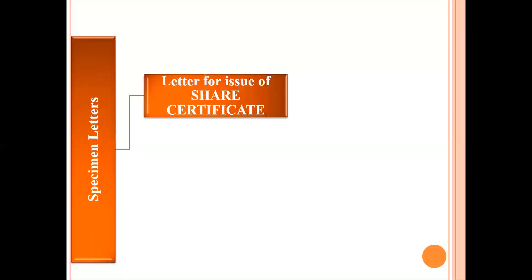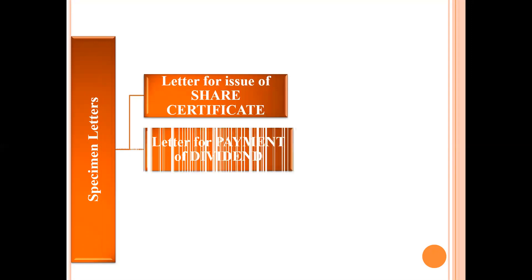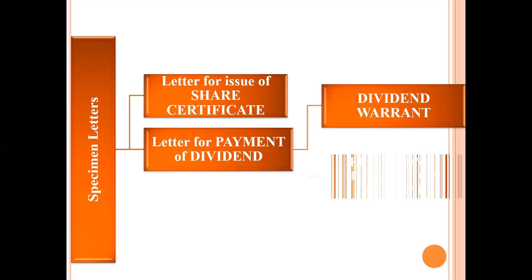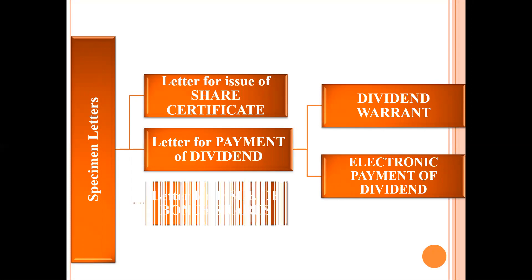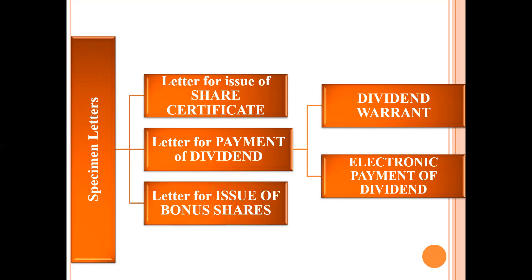We are studying the specimen letters, out of which we have finished the first two letters — that is letter for issue of share certificate and letter for payment of dividend. In that, we saw how a secretary issues a dividend warrant, and second, if it is electronic payment of dividend, how the members are notified or informed about it. But today we will be seeing the third type of letter, which is given in your textbook — that is letter for issue of bonus shares.